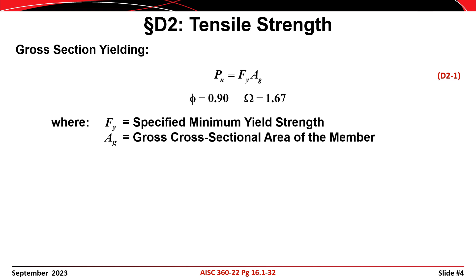Section D2 addresses the strength of tension members, and the first of the two strength limit states is gross section yielding, or tension yielding as it's known in the AISC specification. The nominal strength Pn associated with a tension yielding failure is calculated as Fy times Ag, where Fy is the yield stress of the steel and Ag is the gross area of the section. If load and resistance factor design is being used, then the design strength phi times Pn is calculated by multiplying the nominal strength Pn by the resistance factor phi equals 0.9.